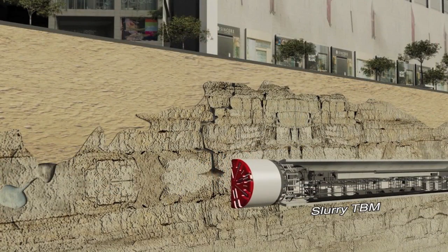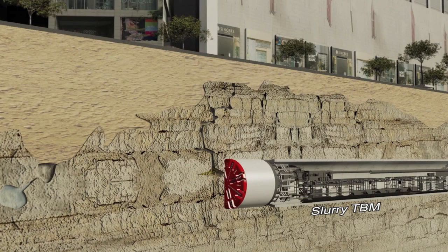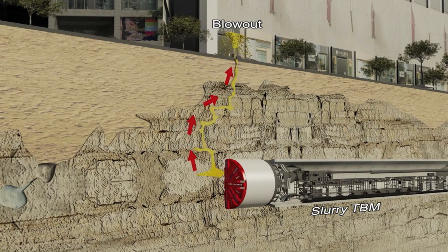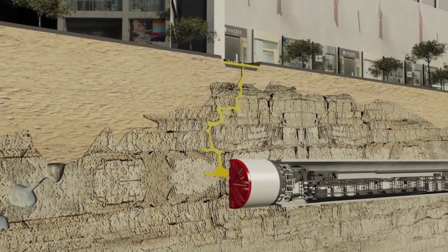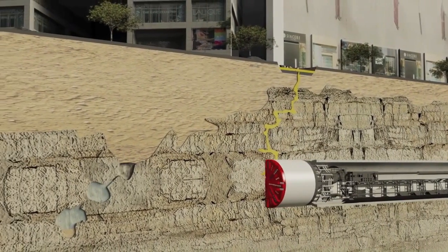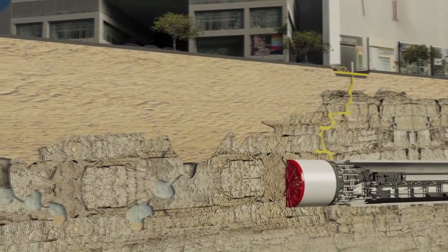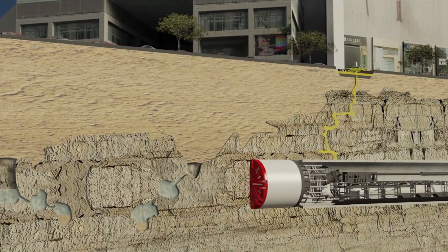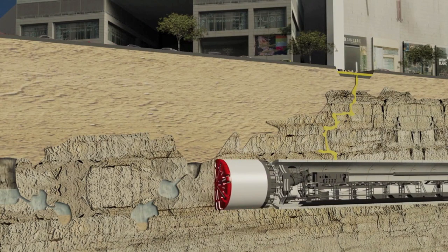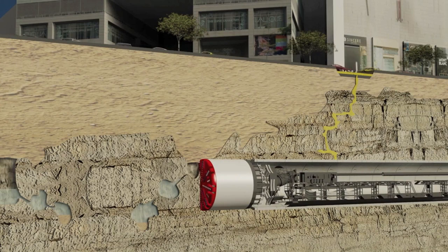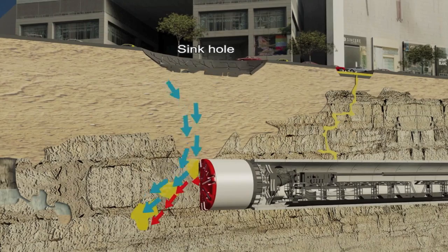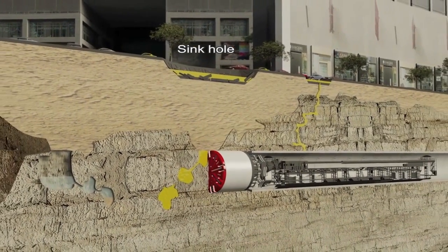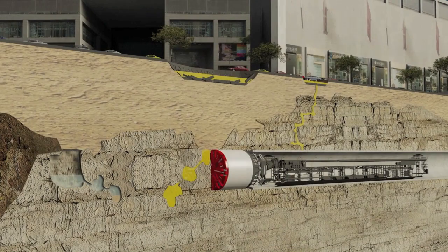A conventional slurry TBM could experience blowouts of bentonite from underground to the surface when the interconnected karst features find their way to the surface. In extremely karst situations, the conventional slurry TBM could experience loss of slurry into karst features and cavities, resulting in loss of face pressure. Losing the face pressure will lead to loose soil caving into the excavation chamber and cavities, thus causing a sinkhole to appear on the surface.